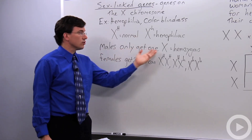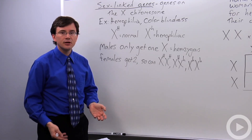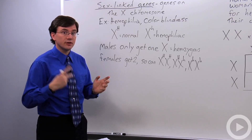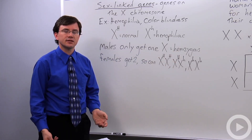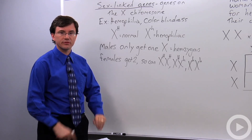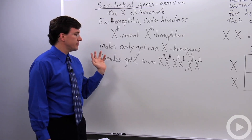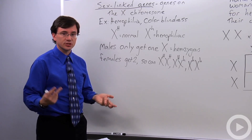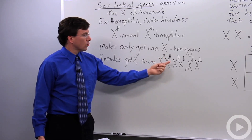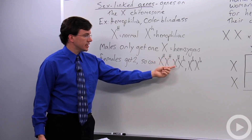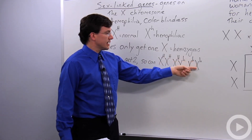Males only get one X chromosome, so you can't say they're homozygous or heterozygous because they don't have two of the same or two different alleles. Instead, some people call that hemizygous, because it has half the normal number of chromosomes, and hemi means half. Females get two X chromosomes, so they can be homozygous dominant X^H X^H, heterozygous X^H X^h, or homozygous recessive X^h X^h.